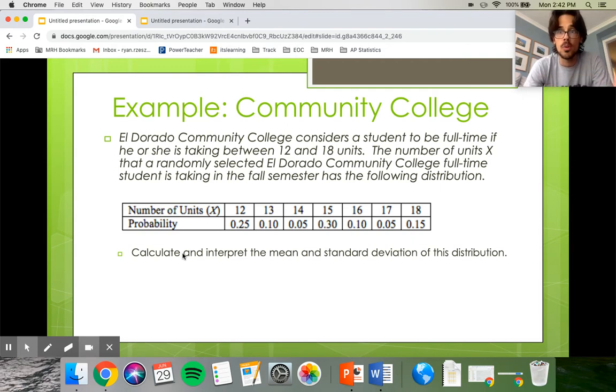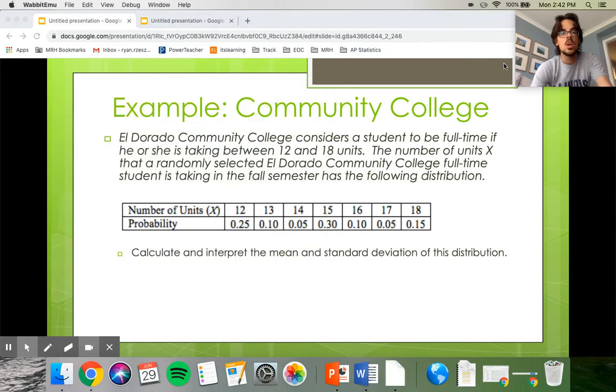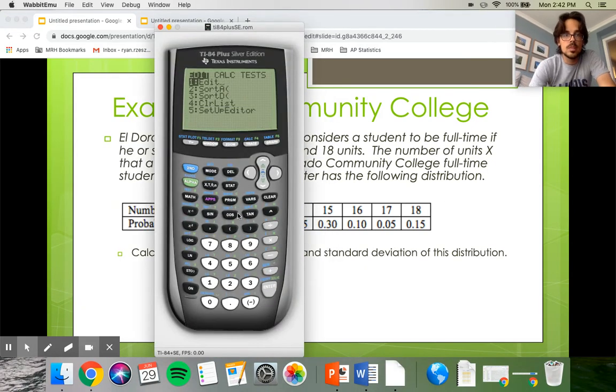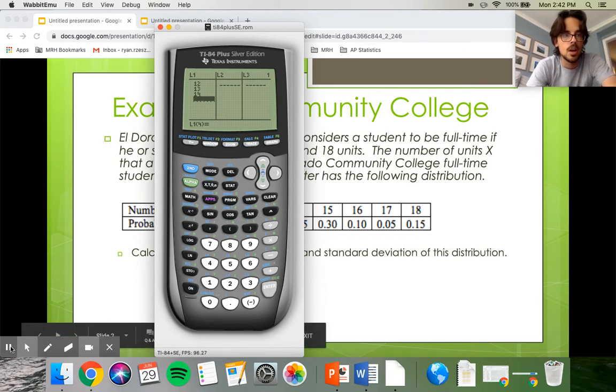They ask us to calculate and interpret the mean and the standard deviation of this probability distribution. And this part right here is just straight-up review of what we learned last section. So you could use your formulas, which we have practiced, and you could get your results that way. But I'm going to opt to use the calculator instead and just type it in. So we reviewed that as well. Remember that all you're going to do with this is go stat edit and type your data in. And then once that data is in the calculator, you are going to go ahead and do a one variable stat.